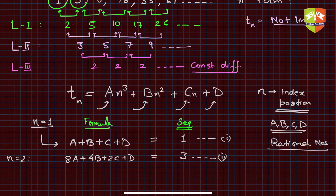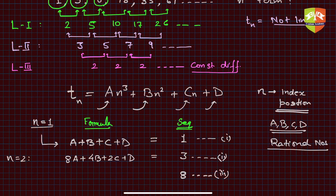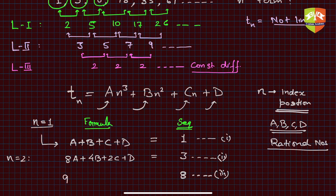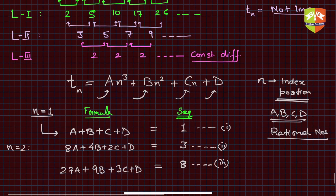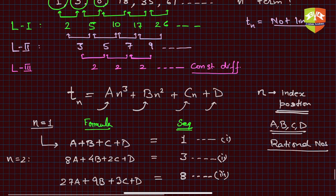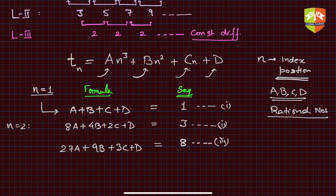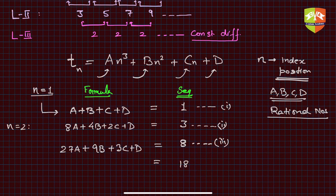For n = 3, the third sequence value is 8. The formula gives 27a + 9b + 3c + d = 8. Call this equation 3. For n = 4, the sequence value is 18. The formula gives 64a + 16b + 4c + d = 18. Call this equation 4. Always check your equations carefully since this is going to be a complicated solution.